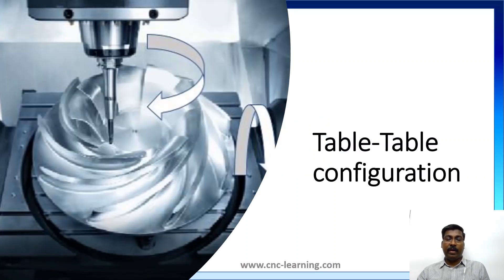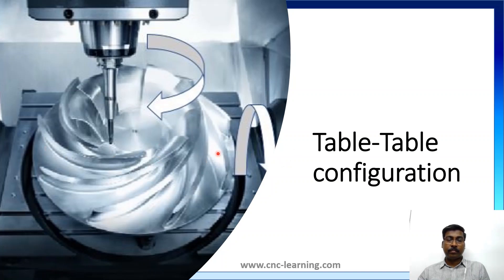In the table-table configuration, both the rotary axis and the tilting axis are on the table — that is why it is called table-table. So both axes can be A and B, B and C, or A and C, depending on how it is configured: about the X-axis, Y-axis, or Z-axis. In this example, the tilting axis is on the X-axis, making it the A-axis, and the rotary axis is configured about the Z-axis, making it the C-axis — so A and C.